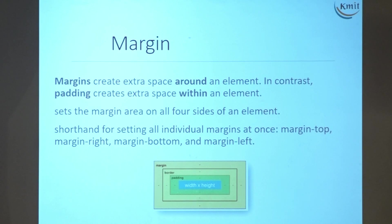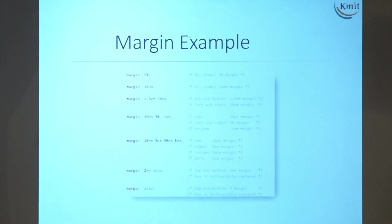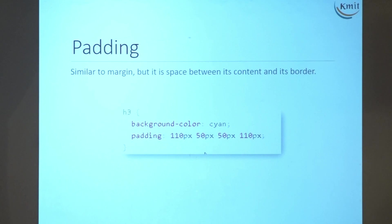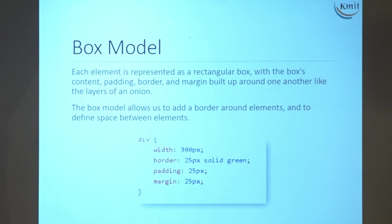Then I talked about margin — margin is outside the border. Then padding — padding is between the content of the object and the border. Then I talked about the box model: if somebody asks about the box model, box is nothing but the content, then the padding, border, and margin.